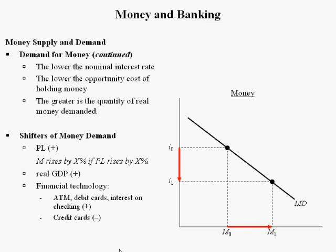Shifters of money demand include the price level. If prices are going up, holding everything else constant, you need more money in your wallet. For example, if you like a cup of coffee that costs $1, but all of a sudden it costs $2, you now need at least $2 in your pocket each day instead of $1. Generally speaking, the quantity of money held, M, rises by X percent — say 10% — if the price level rises by the same percentage.